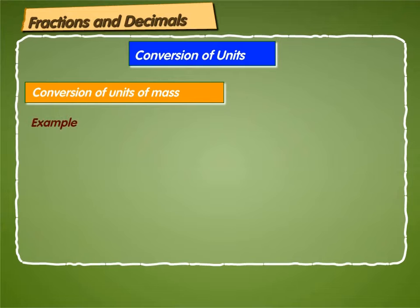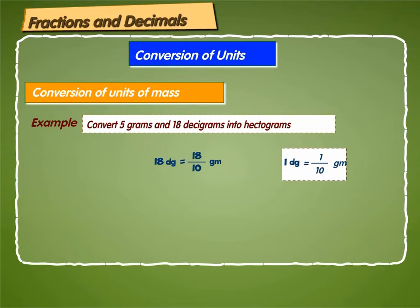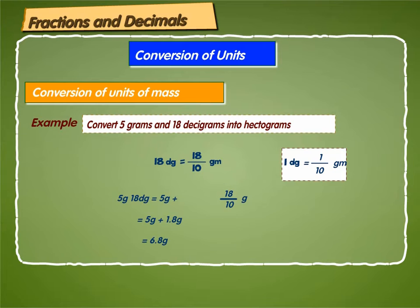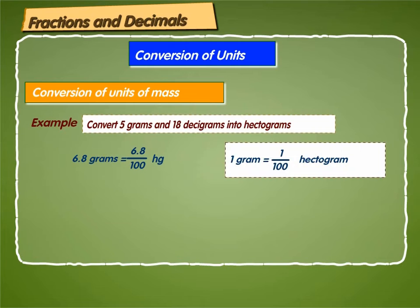Let us take up one more example. Here we have been asked to convert 5 grams and 18 decigrams into hectograms. First, we divide 18 decigrams by 10 to convert into grams, as 1 decigram is equal to 1 by 10 gram. So 5 grams 18 decigrams is equal to 5 grams plus 18 by 10 grams, which equals 5 grams plus 1.8 grams, giving 6.8 grams. Now we divide 6.8 grams by 100 to convert grams into hectograms, as 1 gram is equal to 1 by 100 hectogram, and get 0.068 hectograms.